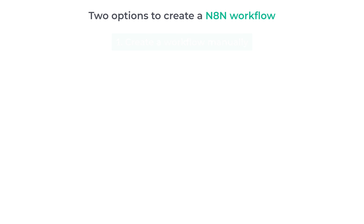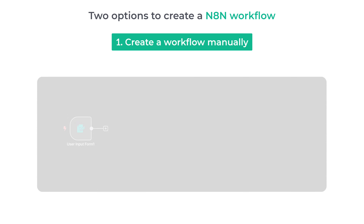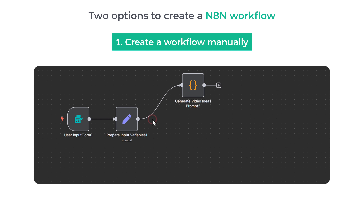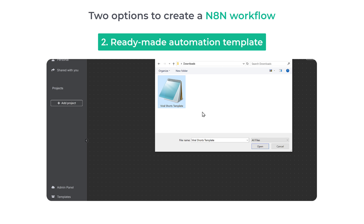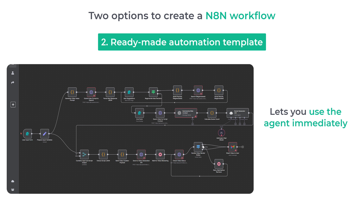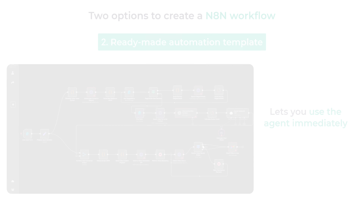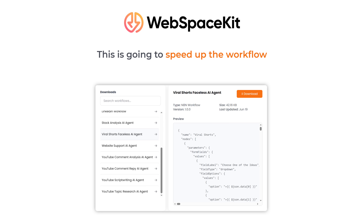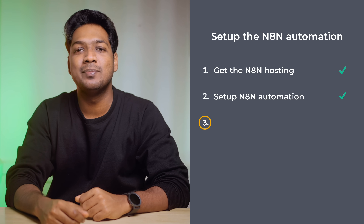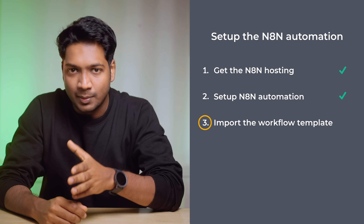You have two options: you can either create a new workflow and build the engine manually by adding each node one by one, or you can use the readymade automation template, which lets you quickly import the workflow and use the agent immediately. To make it simple, we are going to use the workflow template that is already available in WebSpaceKit where NATEN is hosted. Let's move on to step three, which is to import the workflow template.